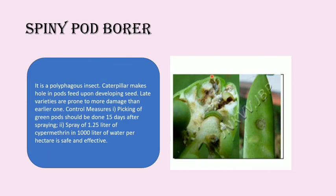The spiny pod borer is a polyphagous insect. The caterpillar makes holes in the pods and feeds on the developing seeds. Late varieties are more prone to damage than earlier ones, so late varieties should not be grown. Control measures include picking of green pods 15 days after spraying, and spray of 1.25 liters of cypermethrin in 1000 liters of water per hectare is safe and effective.